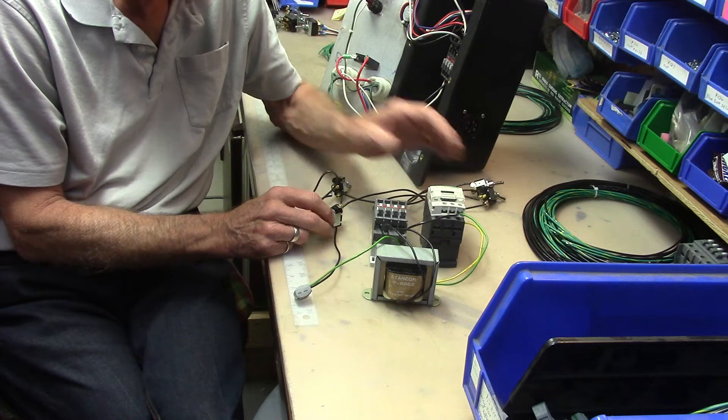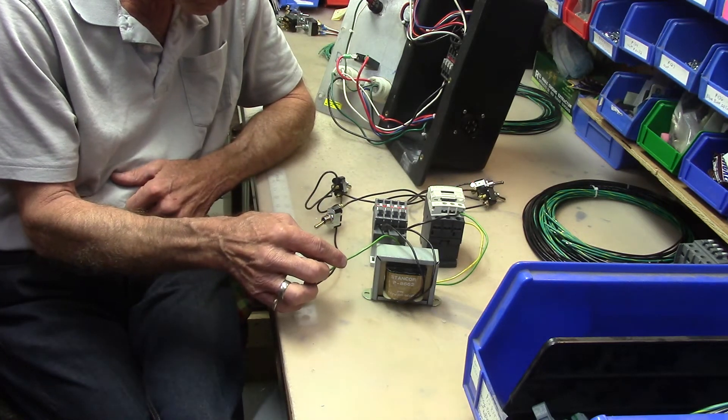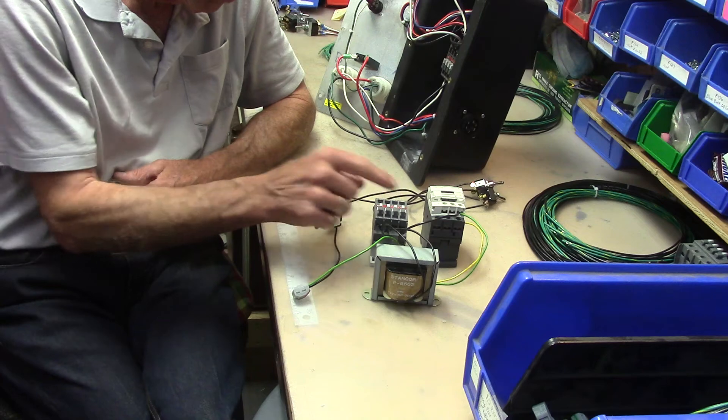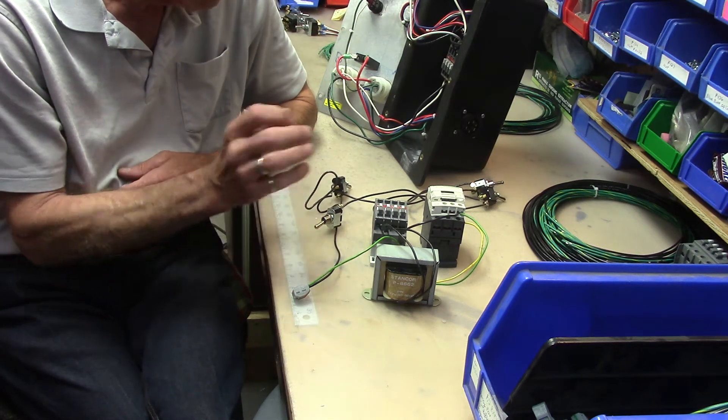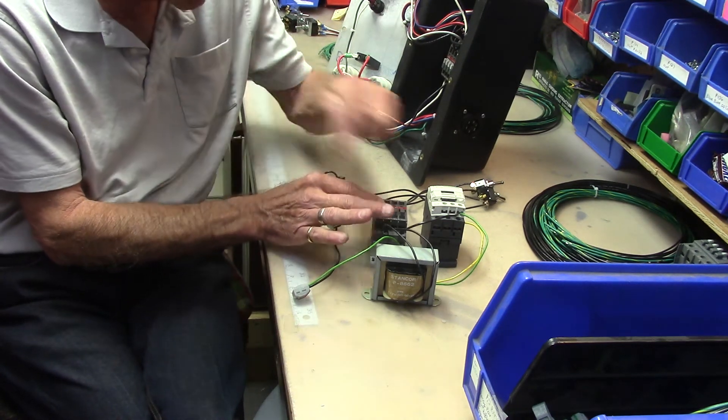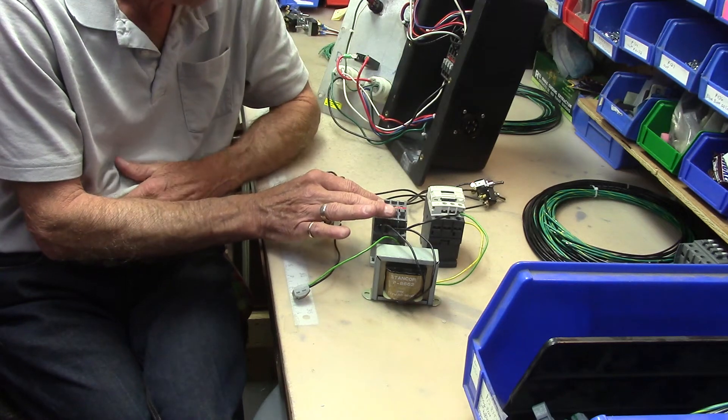The ultimate test for a contactor would be to put 24 volts from both wires to the contactor directly and see does it pull in. If it pulls in good and solid and has a good ohms check across, it's good.